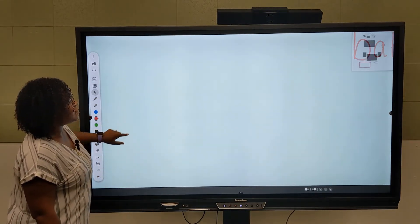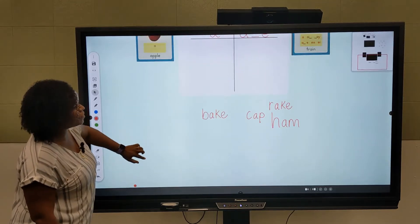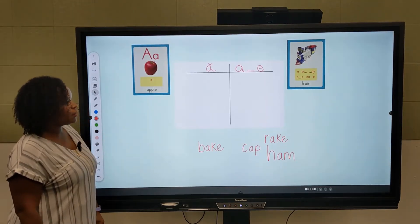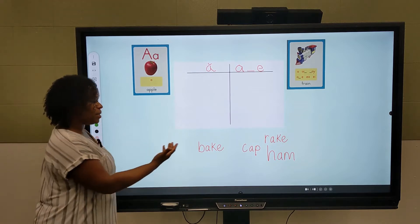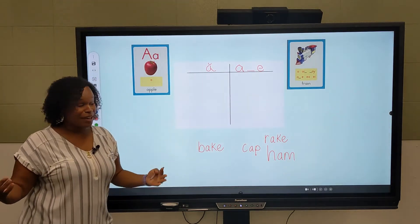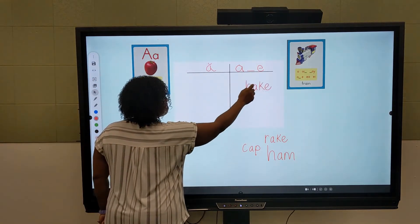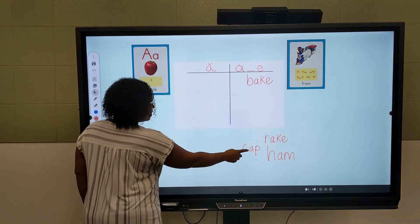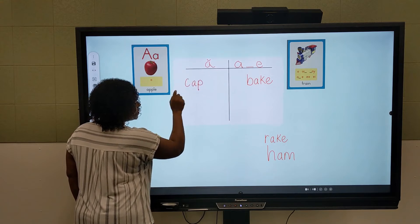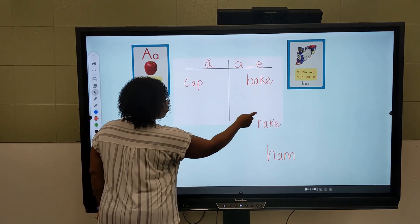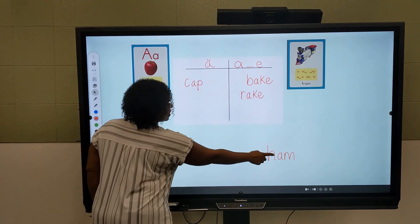So here we have an ELA lesson if we were working on words and separating long A from short A. Because I've written in advance and waited the three second rule, I can now independently move these words. Bake, cap, rake, ham.